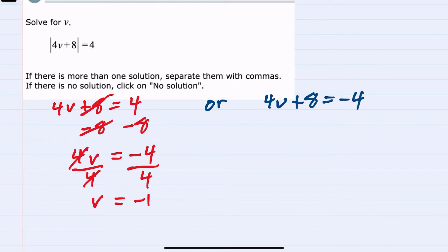Or from the right-hand side, we would do the same process to isolate the v. Subtracting the 8 from both sides, this time gives me 4v equals negative 12. And dividing by 4 on both sides, giving us v equals negative 3.